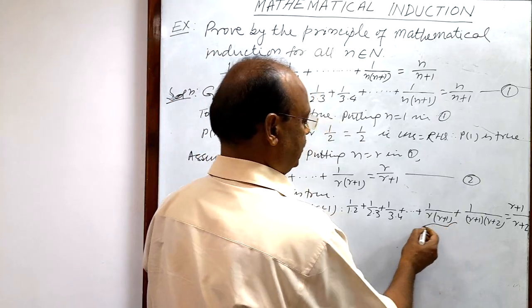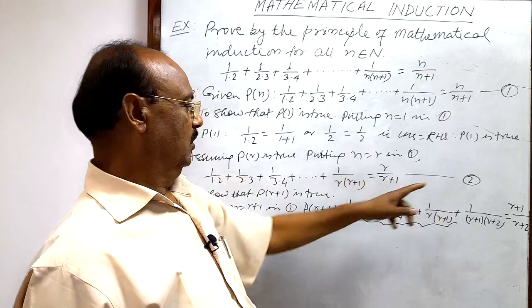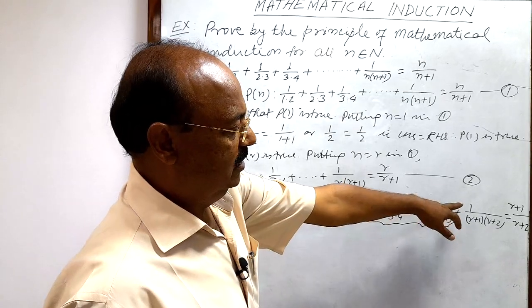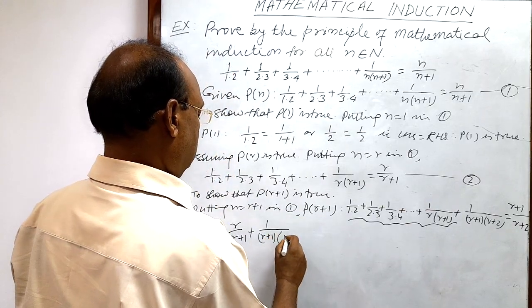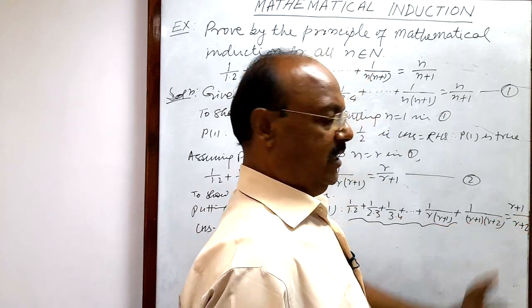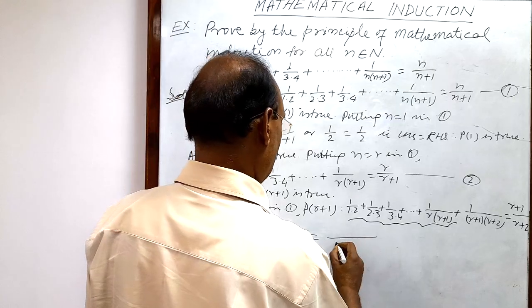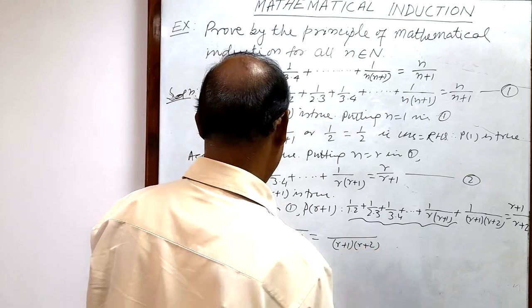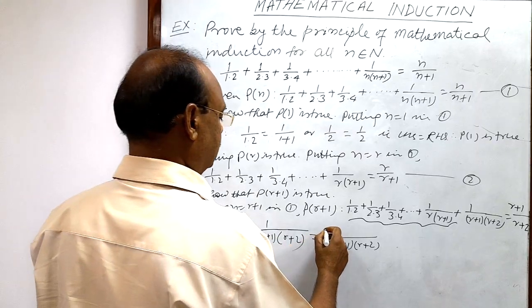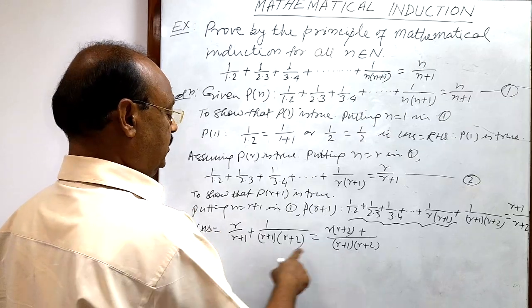In the left hand side, up to the second-to-last term we can substitute r/(r+1) from relation number 2. So the left hand side becomes r/(r+1) + 1/((r+1)×(r+2)). Taking LCM as (r+1)×(r+2), the numerator becomes r×(r+2) + 1.